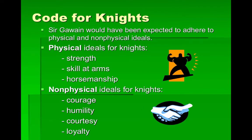The code for knights: Sir Gawain would have been expected to adhere to physical and non-physical ideals. Physical ideals include strength, skill at arms — meaning they were good at battle — and horsemanship. The non-physical ideals for knights are courage, humility, courtesy, and loyalty.